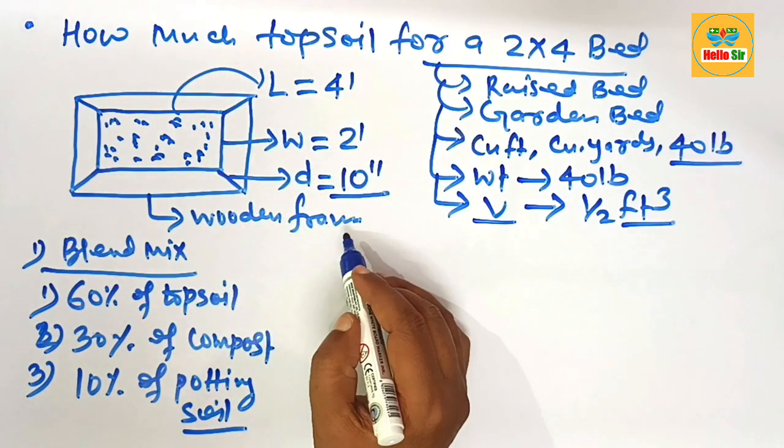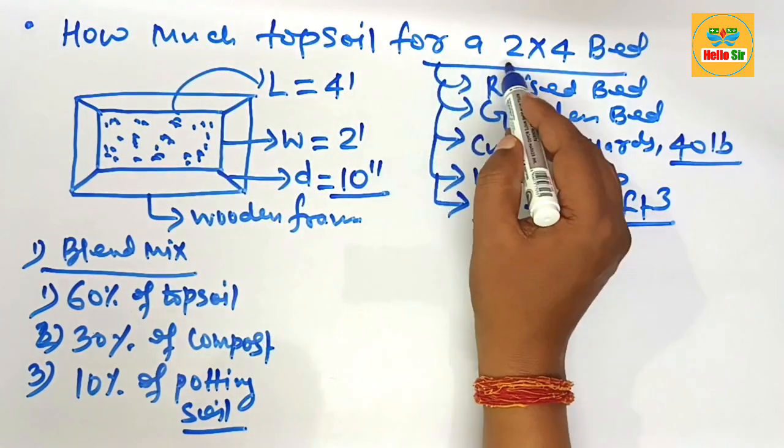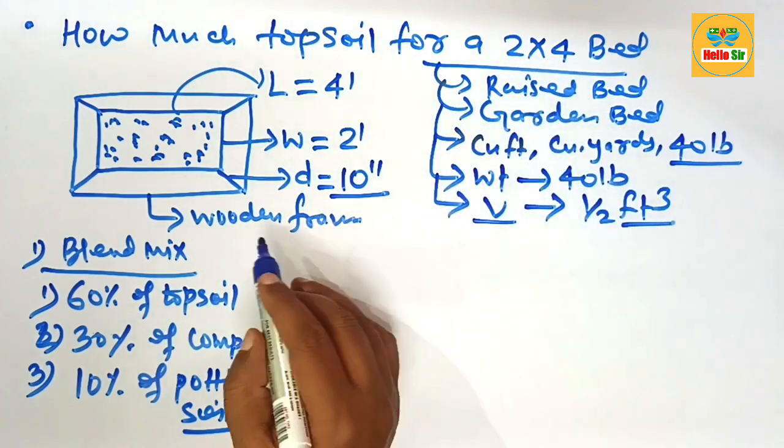But here you have to find out the quantity of topsoil for creating a new bed that is 2 by 4 in dimension.